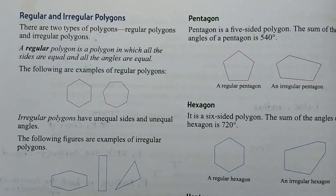This is triangle, quadrilateral, hexagon, pentagon, heptagon, octagon, nonagon, and decagon. Now let's see the regular polygon.